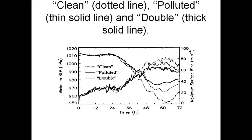What motivated me to write the paper in the Journal of Weather Mod was that when we looked at the simulations — just the maximum wind speed — the clean case storm was much more intense than the case with double the CCN concentrations, the difference being on the order of 20 to 25 meters per second, or 40 to 50 knots. The difference in minimum sea level pressure between the double and clean cases was on the order of 25 to 30 millibars.